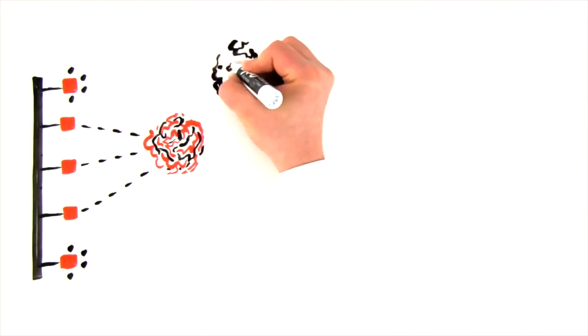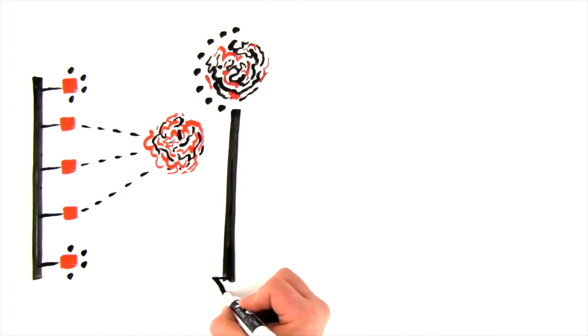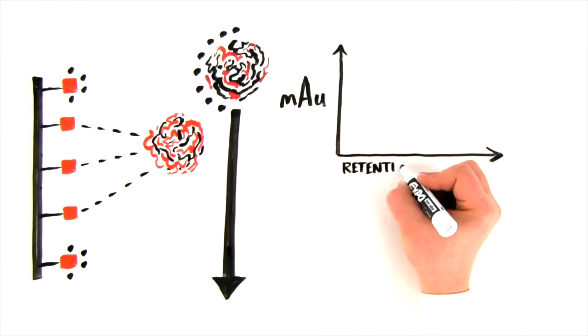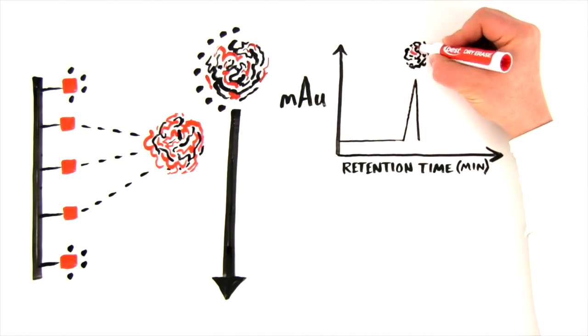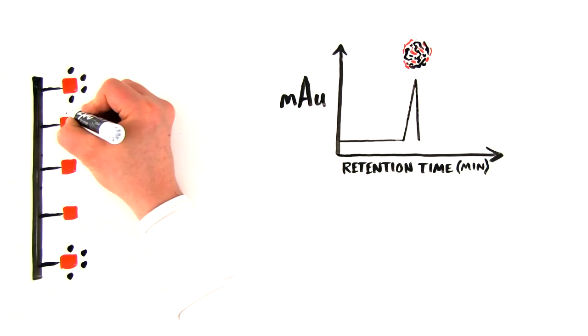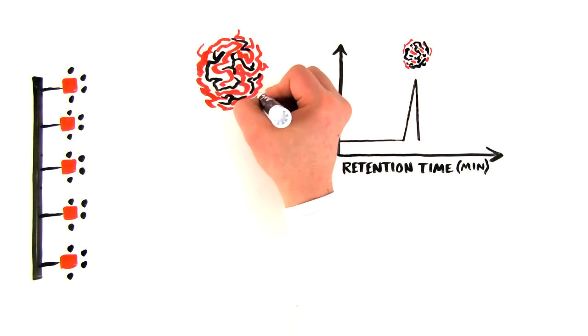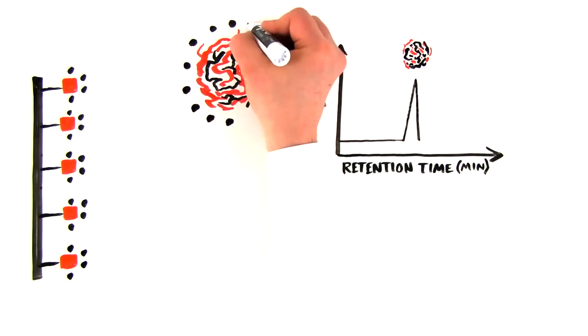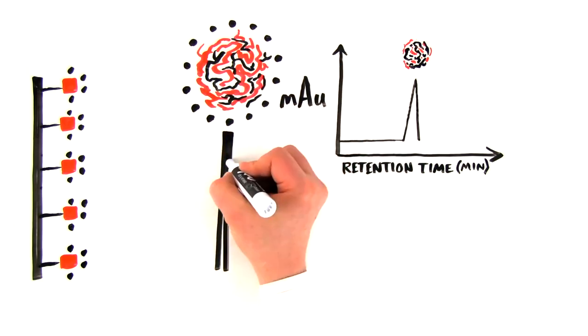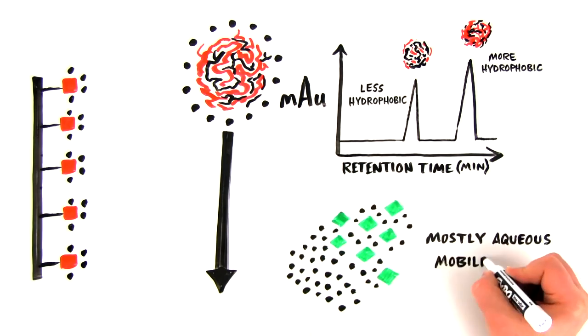In this example, the moderately hydrophobic protein is eluted first, reflecting the lowest amount of hydrophobic interactions established with the stationary phase, as compared to the strongly hydrophobic protein. Conversely, the strongly hydrophobic protein requires more free water in the eluent phase, corresponding to low salt concentration, in order to be eluted, and therefore its retention time is higher.